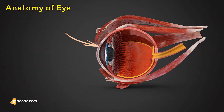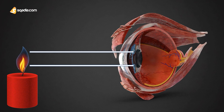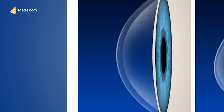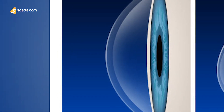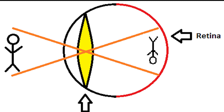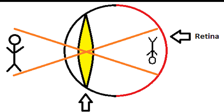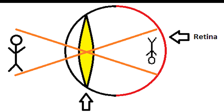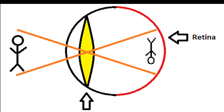The outermost region of the eye is the cornea. Light passes through the cornea first, and is then refracted because the cornea has a curved convex shape. The image formed by the cornea is upside down and reversed from right to left.